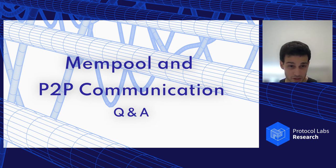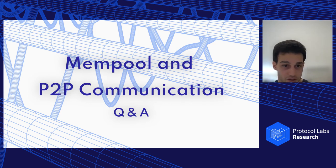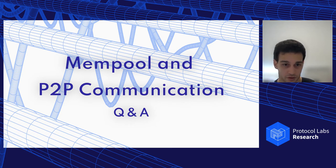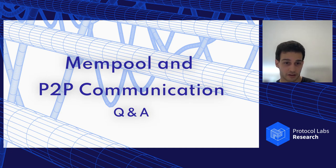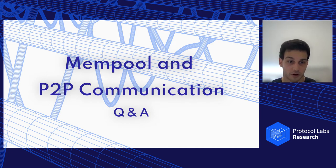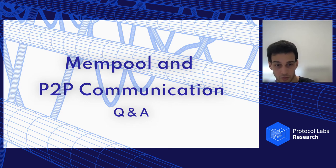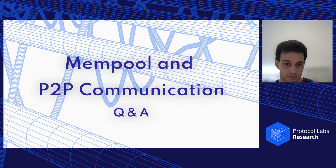For the second question, the difference with Hashgraph — there are many actually. The difference pretty much stops at the fact that we both use a DAG, but our DAG is structured. Every header links to 2f+1 certificates of the previous round, not of any round. Also, we have a DAG of certificates which guarantee availability. That's not the case with Hashgraph and others.